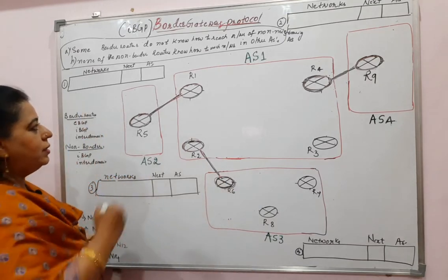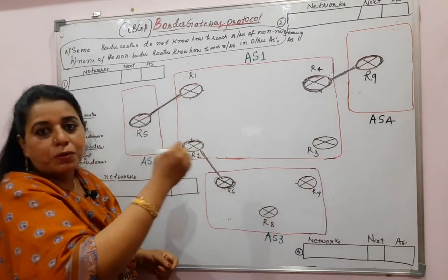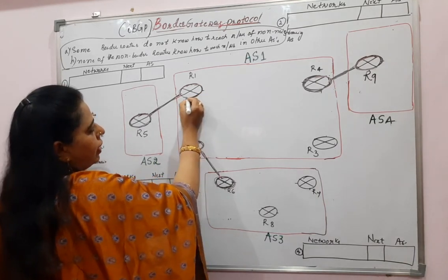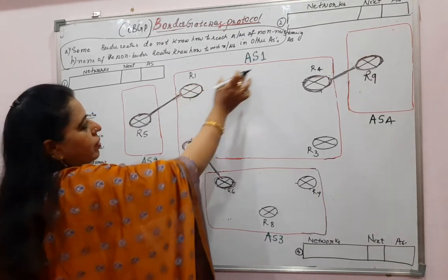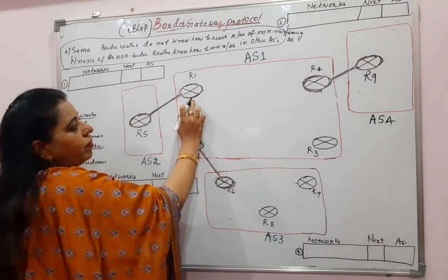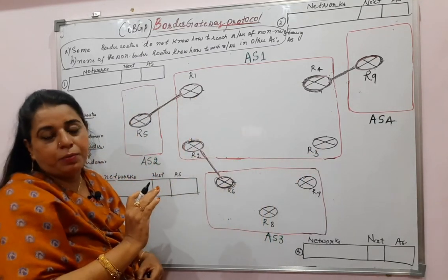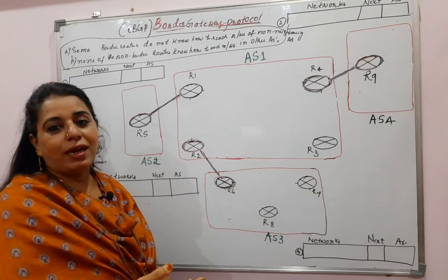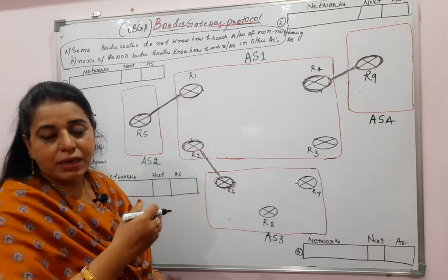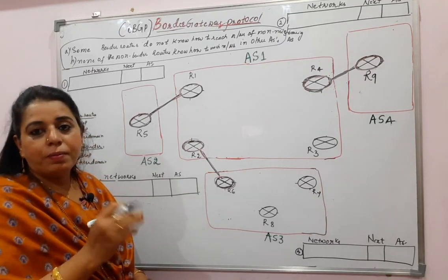In this diagram, I have already shown the EBGP sessions between the border routers. Now let me show you the IBGP sessions getting established. R1 will establish internal sessions with all the routers present in its autonomous system only — those sessions are called IBGP sessions. To exchange messages, IBGP also makes use of the TCP protocol and port number 179.